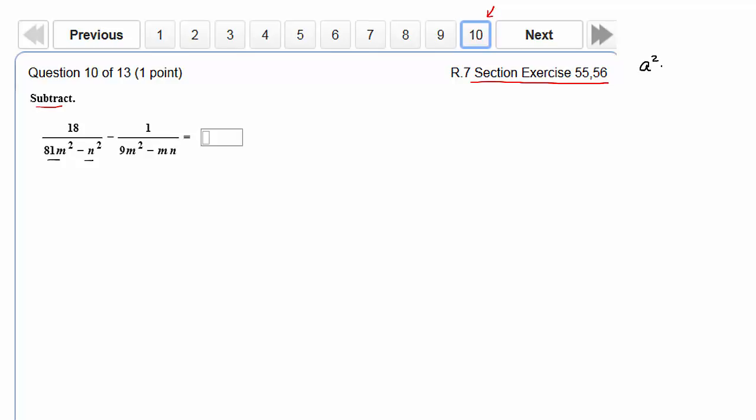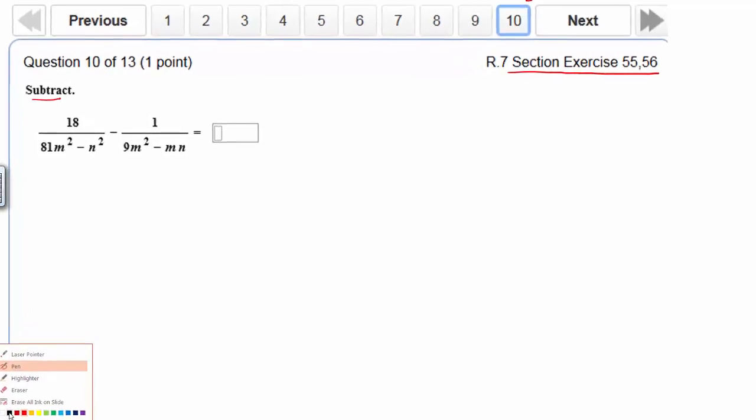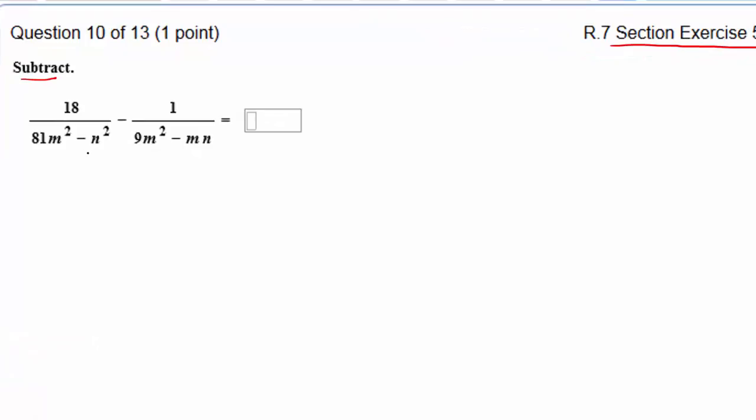Hi, I'm Miss Hearn, let's get started. We're subtracting rational expressions, which are just fractions with variables in them. We'll need a common denominator, which we don't have, so we'll need to factor our denominators to figure out what our LCD would be.